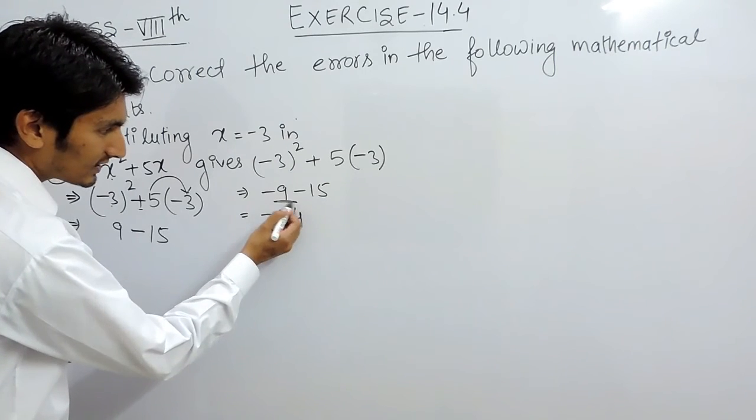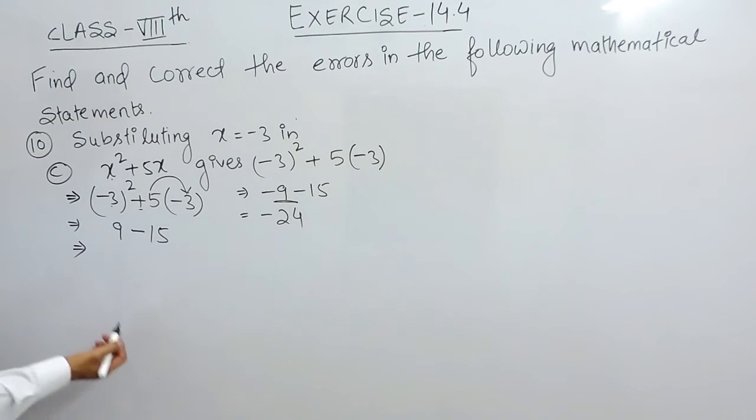Now I have to solve it by BODMAS. We know that this is the plus sign, plus minus when solved should give minus, and 15 minus 9 is 6 with negative sign because greater value has negative sign.